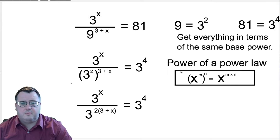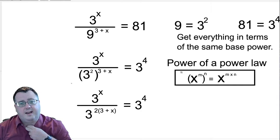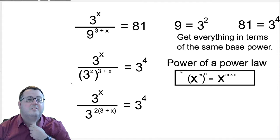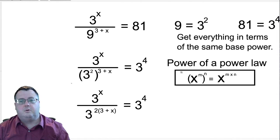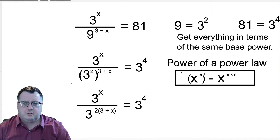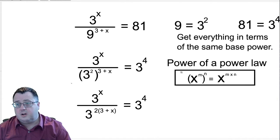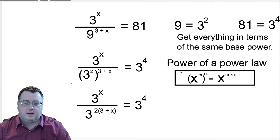Right, let's move on and go through it. So here's the question from the previous slide. 3 to the x divided by 9 to the power 3 plus x equals 81. So the first thing you want to do is get everything in terms of the same base power. That is to say that 9 is equal to 3 squared and 81 is equal to 3 to the power 4. And that's what I do for the second line here. Okay, so you can see I've replaced the 9 and the 81 with 3 squared and 3 to the 4.